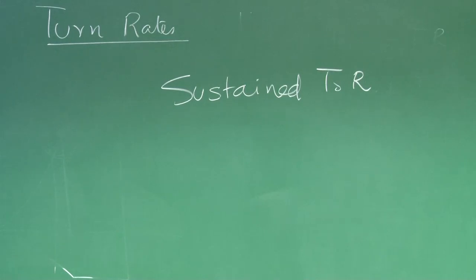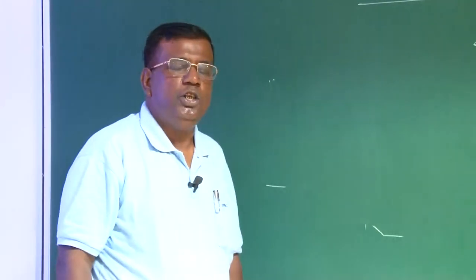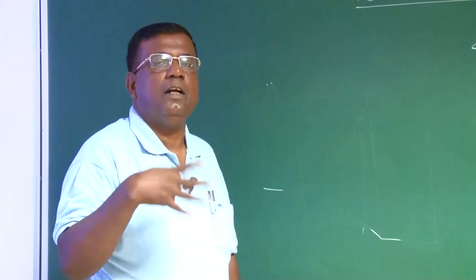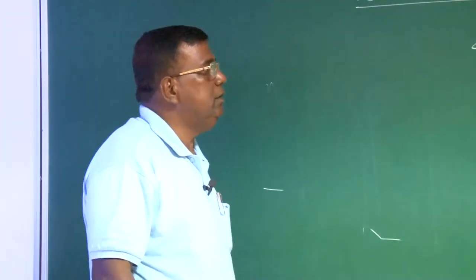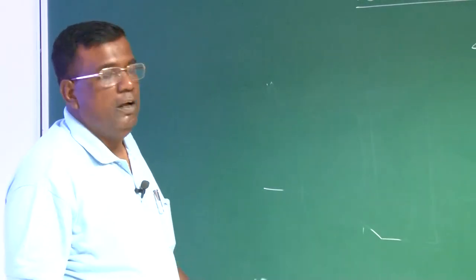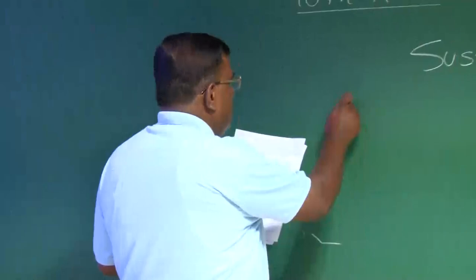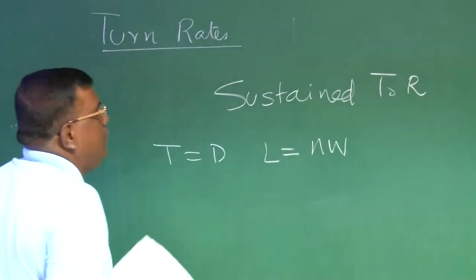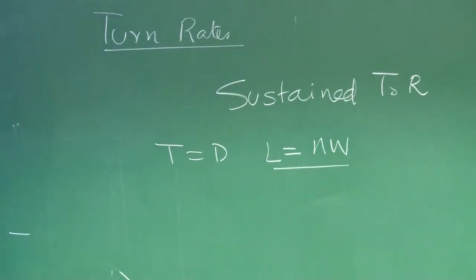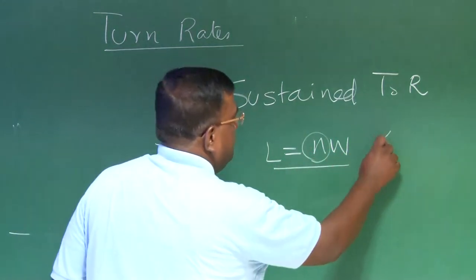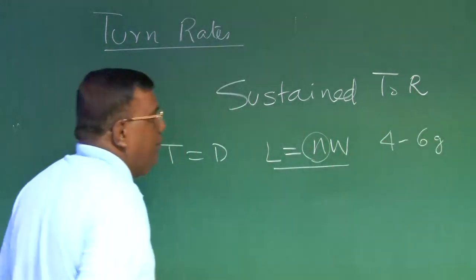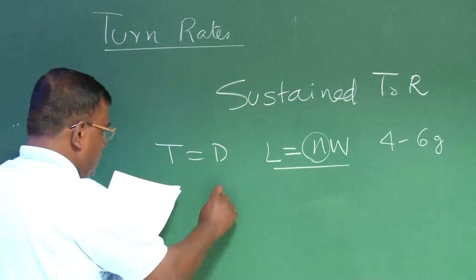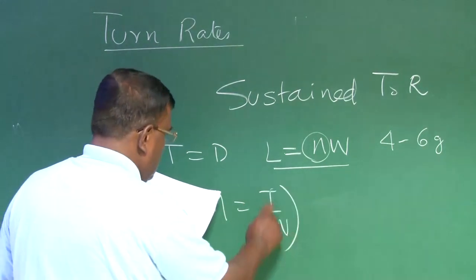Sustained turn rate, please understand, if I have to turn, at the same time, I have to ensure that I do not lose altitude nor there is reduction in the speed. That means the thrust has to play an important role during the sustained turn rate. This is important for a combat scenario. And if I now try to see what does it mean, you know you have to generate that much of lift so that you get a particular load factor. And this could be 4 to 6 g or 8 g, depending upon what you are doing.